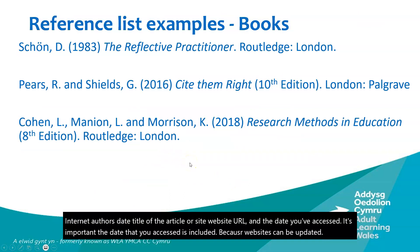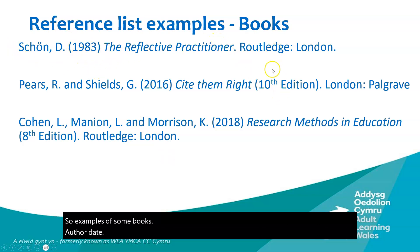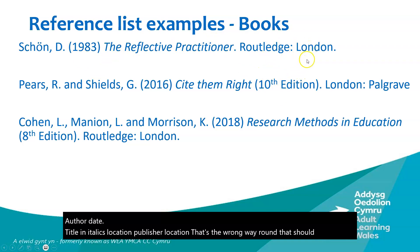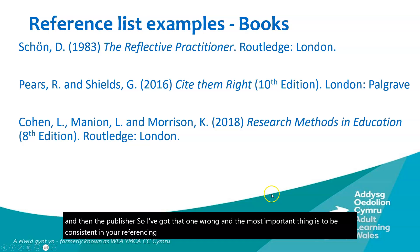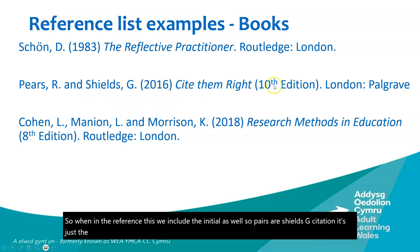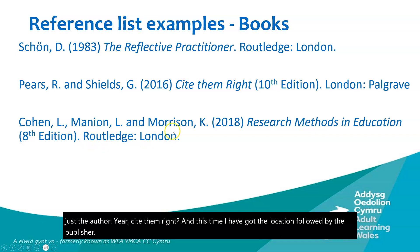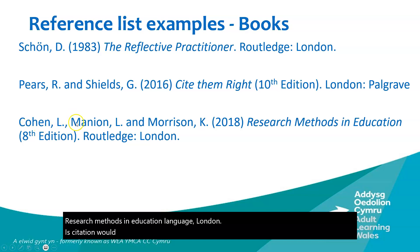Examples of books: author, date, title in italics, location, then publisher — I had that the wrong way around earlier, so I'd be marked down for inconsistency. For Pears and Shields, in the reference list we include the initial as well. Cite Them Right — this time I have the location followed by the publisher correctly. For Cohen, Manion, and Morrison, Research Methods in Education, the citation would be Cohen et al. because it's more than two authors.